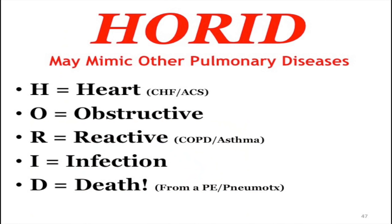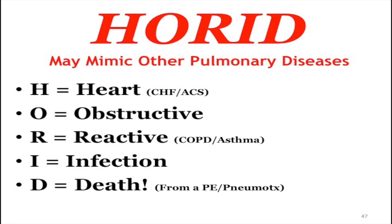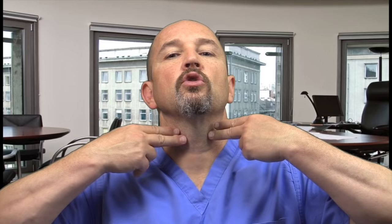For pulmonary symptoms, there are only five causes of shortness of breath on your boards: cardiac, obstructive, reactive, infection, or death from PE/pneumothorax. There are three lung sounds: ronchi means gunk in the big airways; rales or crackles means fluid in the small airways; wheezing means the small airways are clamped down — they need bronchodilators or steroids. Croup is caused by narrowing of the upper airway — the steeple sign on X-ray. Croup is also known as laryngotracheitis.